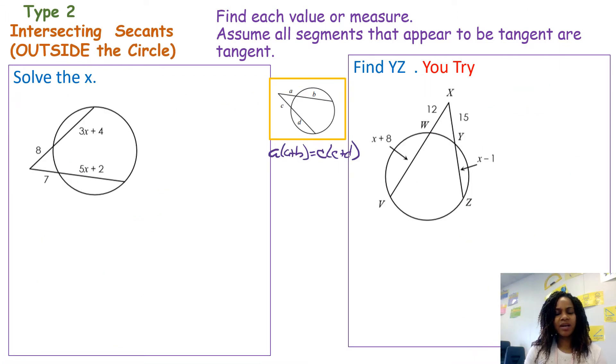Let's look at two problems like type 2 where you have intersecting secants outside of the circle. I have the formula for you right here in the middle. I'm going to label my parts here. I'm going to label this A as A, this piece here as B, C, and D.